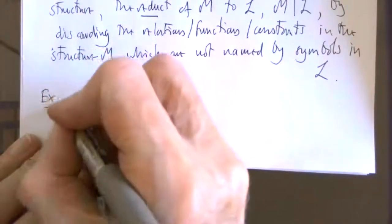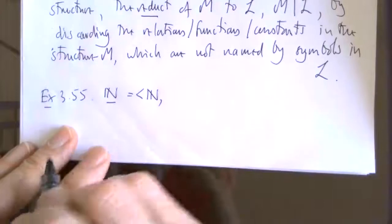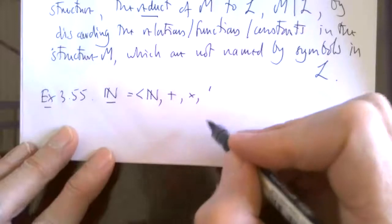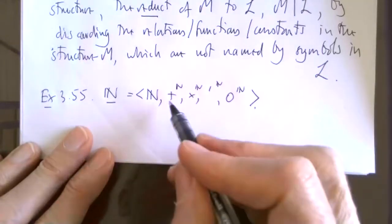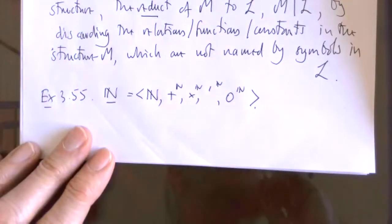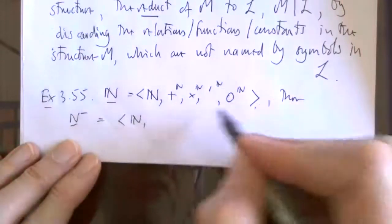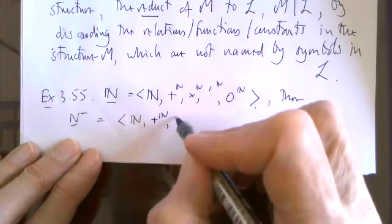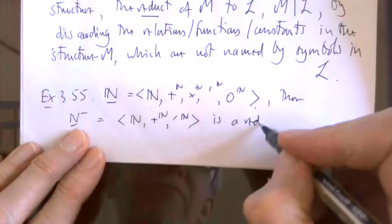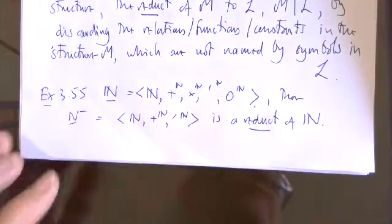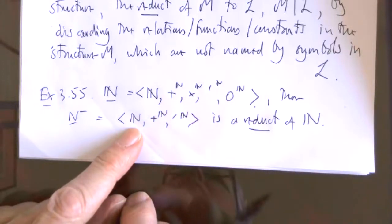Example 3.55: I could take the natural number structure. Here's the natural numbers with plus and times and successor and zero. So I've got three function symbols, one constant symbol. I could say N minus, throw away some things, maybe just take plus and successor. This is a reduct of this. I have the same domain, just thrown away some of the things in the structure.